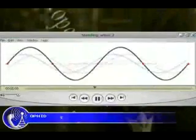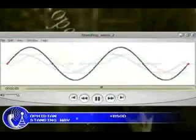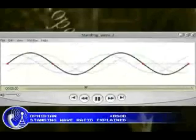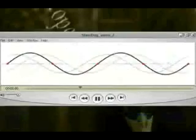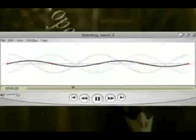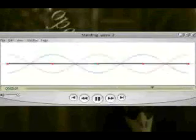Today we're going to talk about standing waves and what they mean to you. Standing waves are a wave in a media, be it a string in the case of a guitar, or a coax cable in the case of a radio system. They are a wave that is made up of two components.